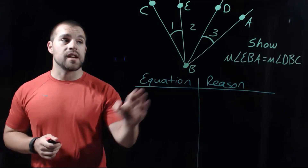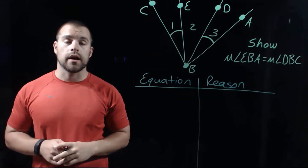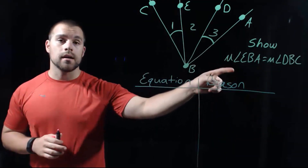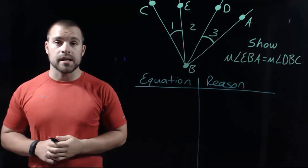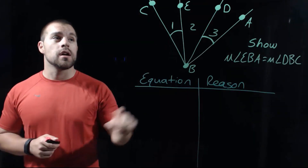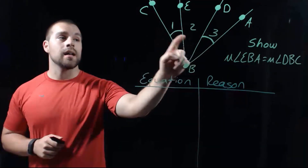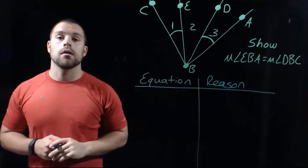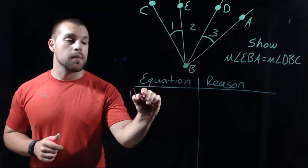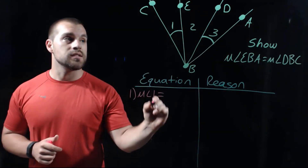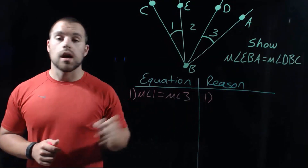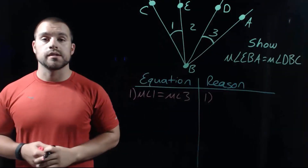In our last example, we're given a diagram and we want to show that the measure of angle EBA is equal to the measure of angle DBC. Looking for given information in the picture, I see that angle 1 and angle 3 have an arc marking, meaning they're congruent. So the measure of angle 1 equals the measure of angle 3, and our reason is: given.